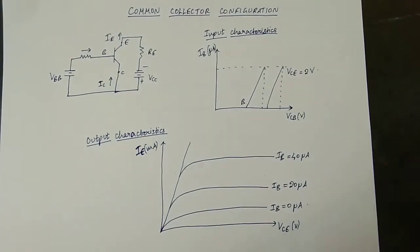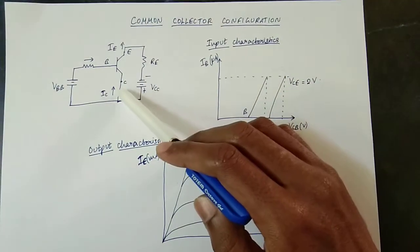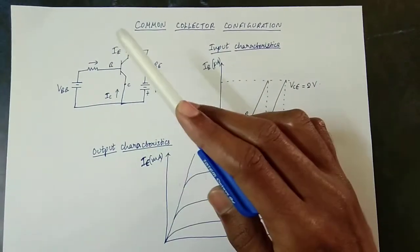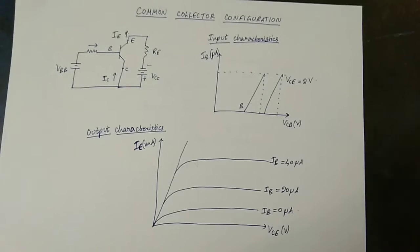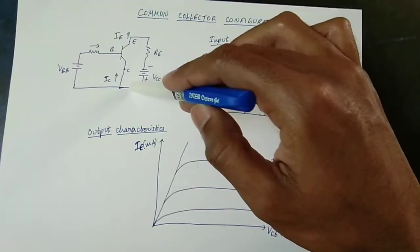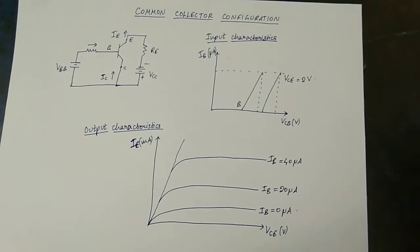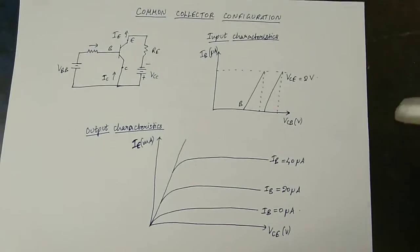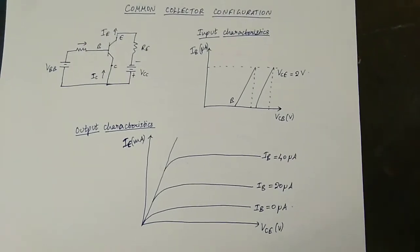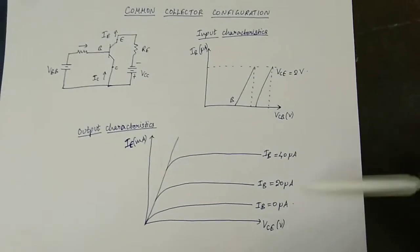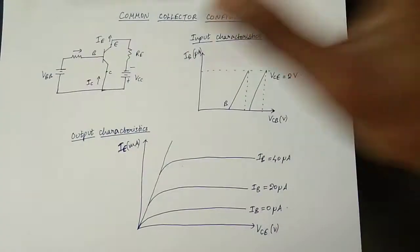For input characteristics, VCB vs IB is plotted, where VCB is input voltage and IB is input current. For output characteristics, VCE and IE are the output factors with IB kept constant.